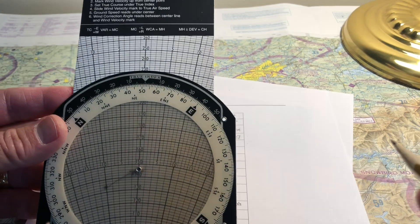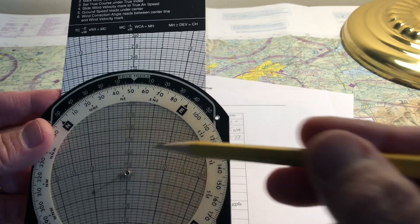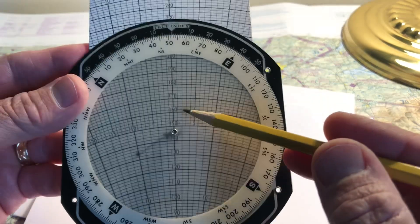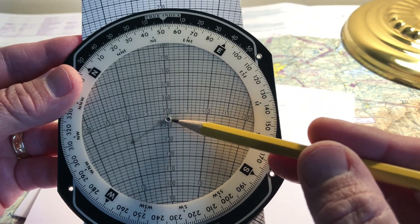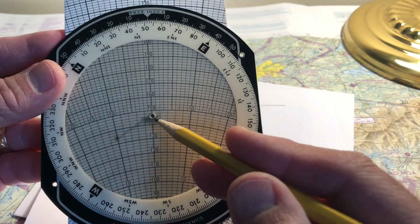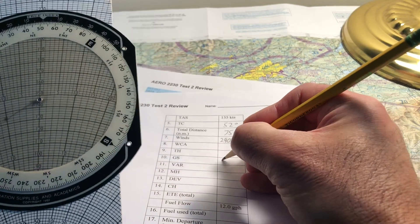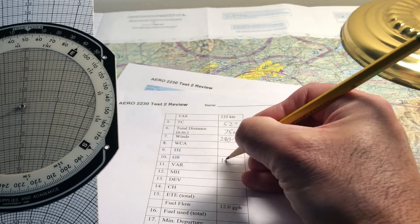The next step is ground speed reads under the center. So I look under the center of the computer and it falls about halfway between 140 and 150. So I'm going to say that the ground speed is 145 knots. I'm going to write that in here. 145.